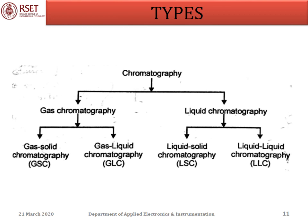The second and important classification is based upon the types of mobile phase and stationary phase used. They are mainly gas chromatography and liquid chromatography. The mobile phase may be either gas or liquid, and the stationary phase may be either solid or liquid. Based upon the mobile phase used, chromatography is classified into gas-solid chromatography, gas-liquid chromatography, liquid-solid chromatography, and liquid-liquid chromatography.